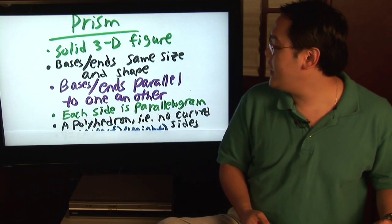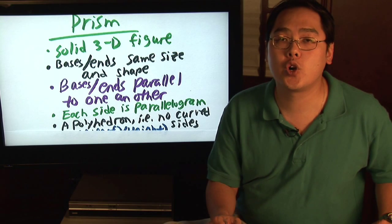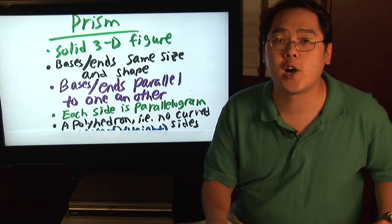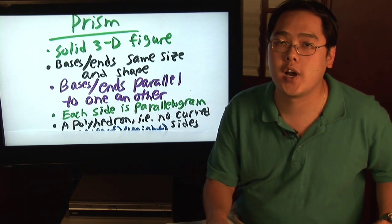A prism though is a polyhedron in that it has no curved sides. In other words, all the sides are flat. There are no curves on the side.